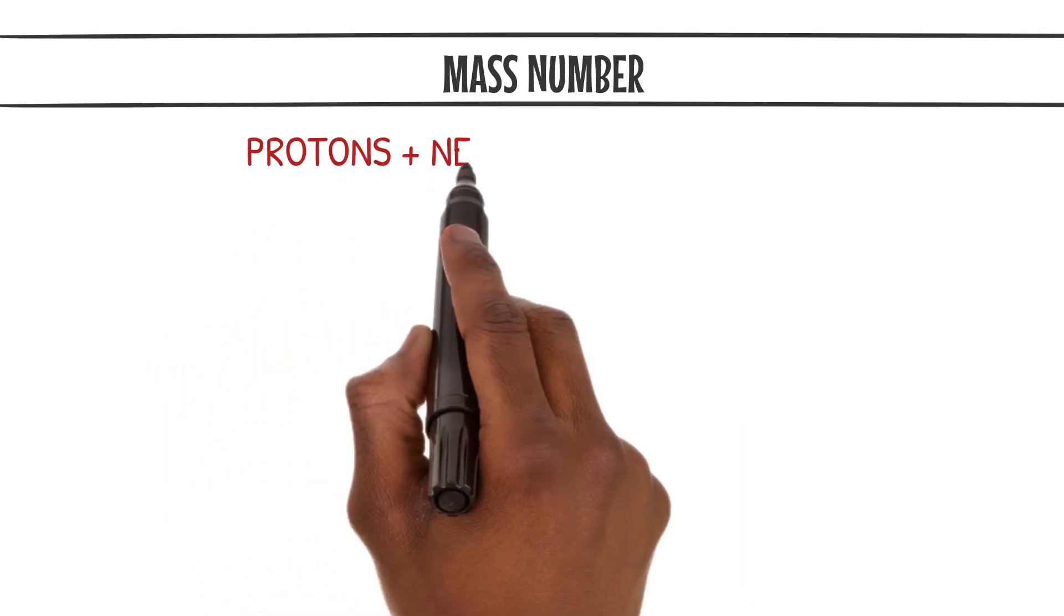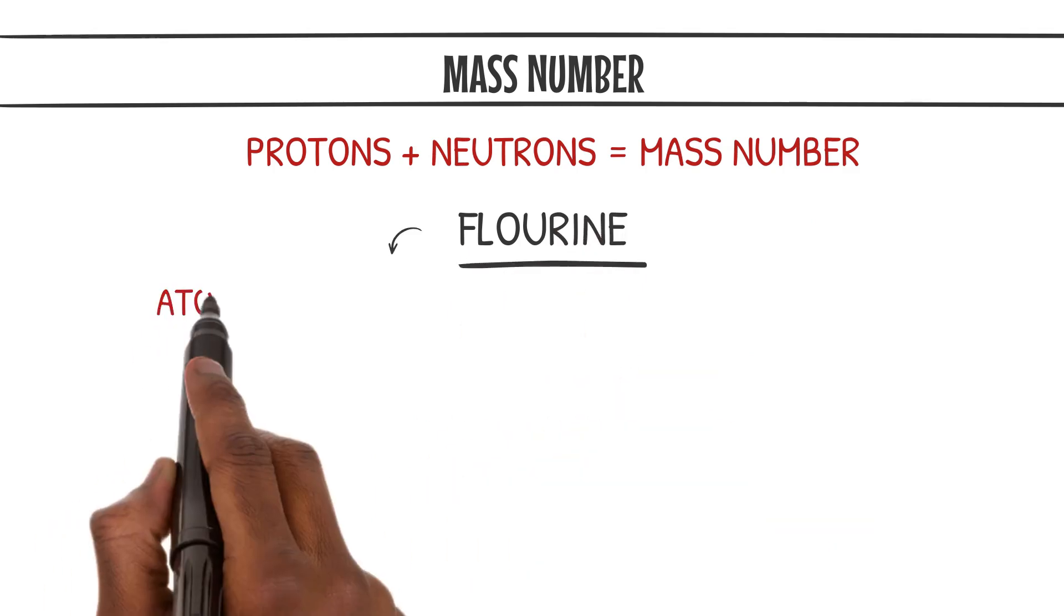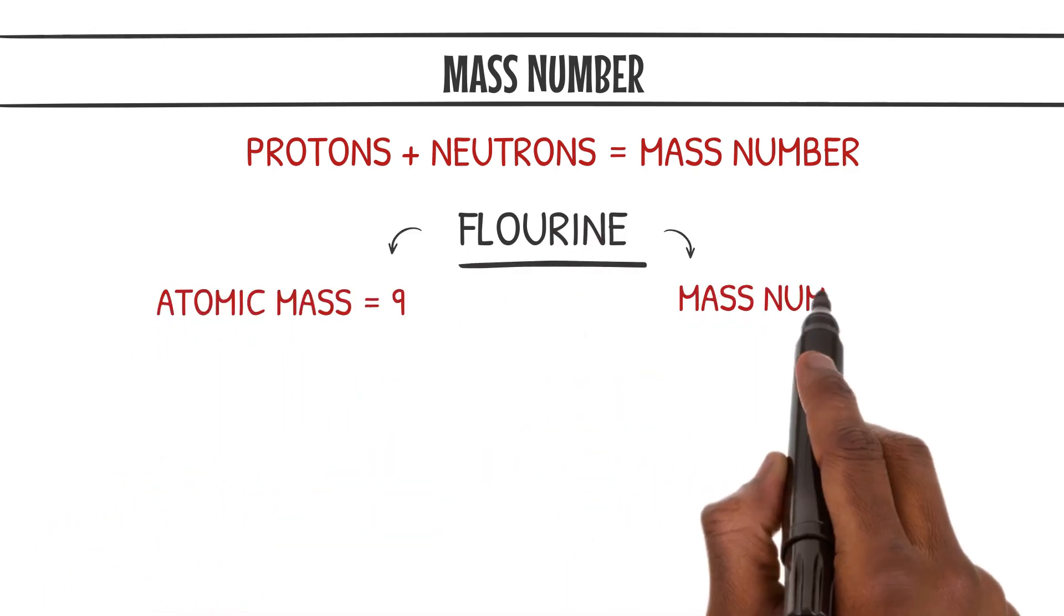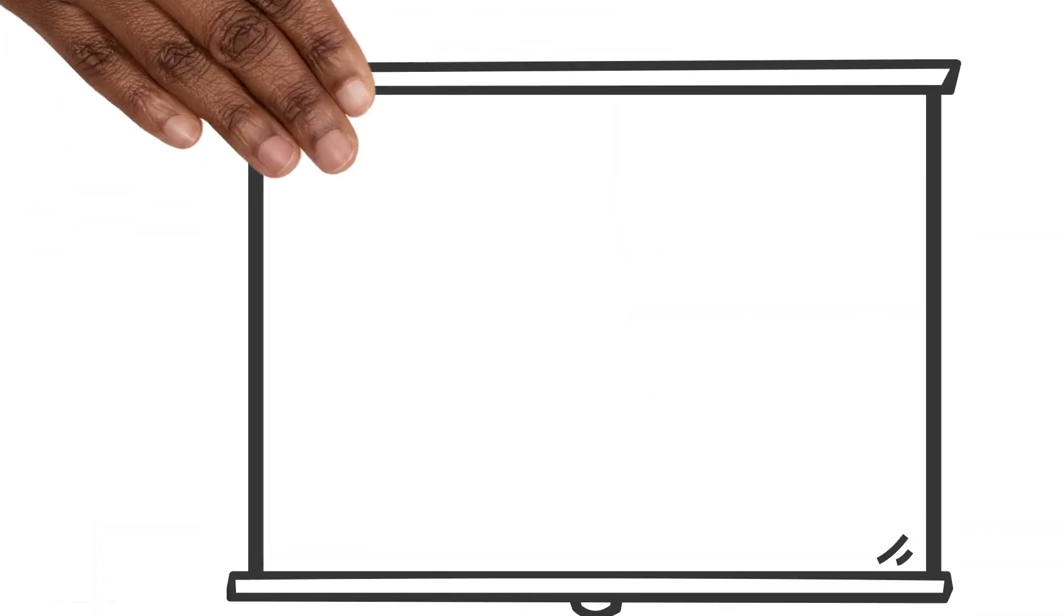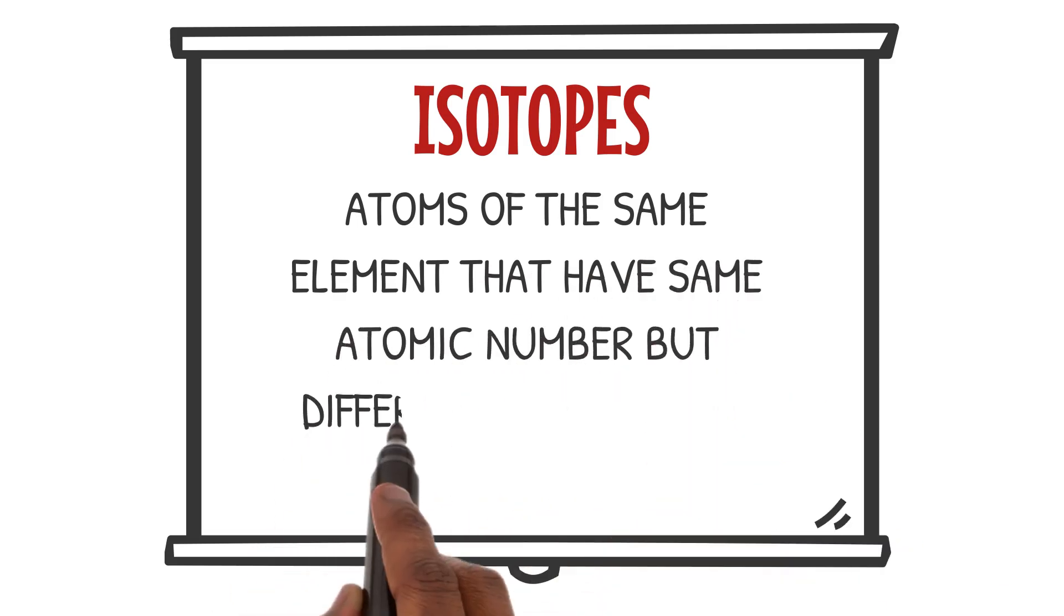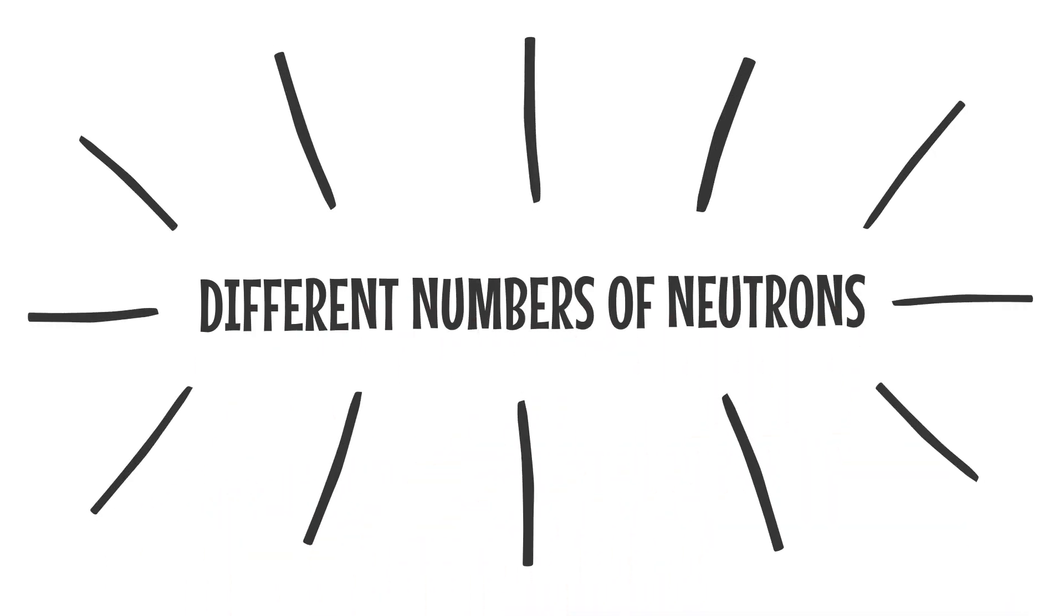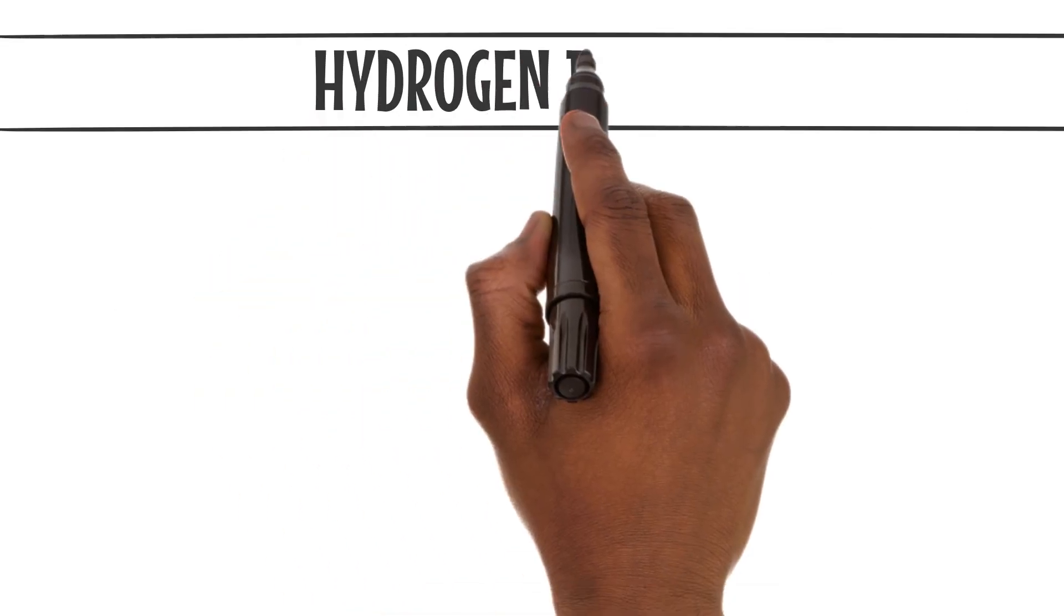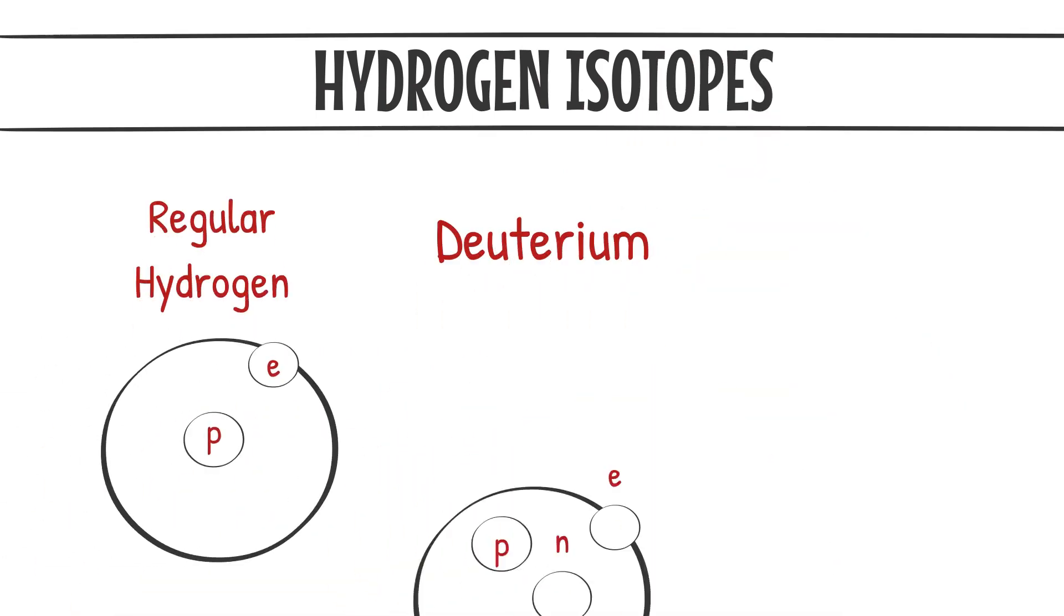The mass number of an element is the sum of its protons and neutrons. For example, fluorine with atomic number 9 has a mass number of 19, indicating 9 protons and 10 neutrons. Isotopes are atoms of the same element that have the same atomic number but different mass numbers. These variations in mass are due to the different numbers of neutrons. Hydrogen, for instance, has three isotopes: regular hydrogen, deuterium, and tritium.